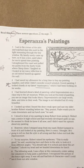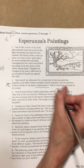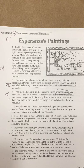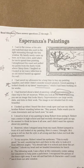Paragraph three: 'I had learned about a kind of painting called Impressionism.' I remember that from one of the questions, so I'm going to mark this because I know it's going to be important. 'I learned about a kind of painting called Impressionism on a class trip to the art museum. When you look at this kind of painting, you see an image that looks blurry. Impressionists use large swirls, dabs, and dots in their work. The image is not detailed, but it's very beautiful.'